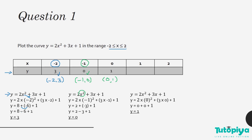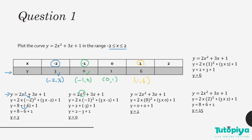Substituting x = 1: 1 × 1 = 1, times 2 = 2, plus 3 × 1 = 3, plus 1. So y = 6, giving coordinate (1, 6). For x = 2: 2² = 4, 4 × 2 = 8, 3 × 2 = 6, plus 1. So 8 + 6 + 1 = 15, giving coordinate (2, 15). We now have five coordinates in total.